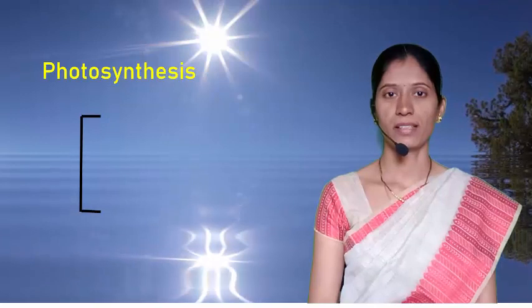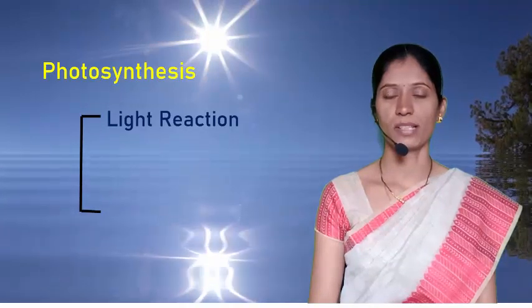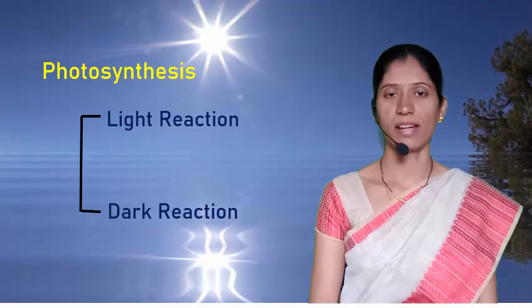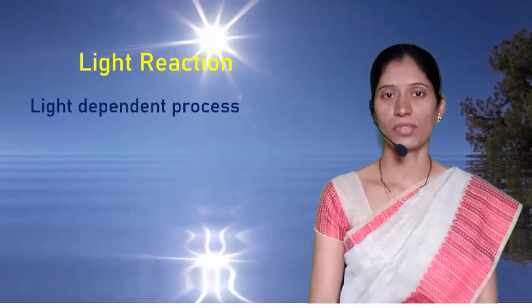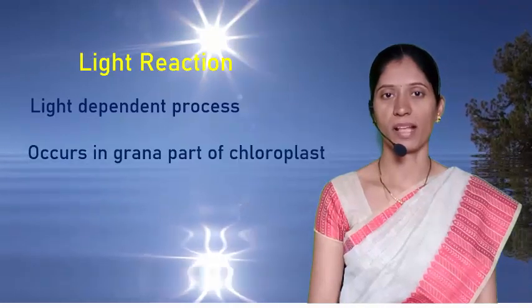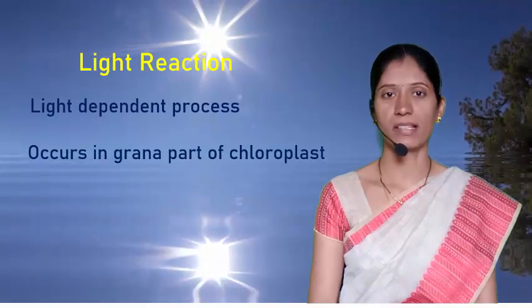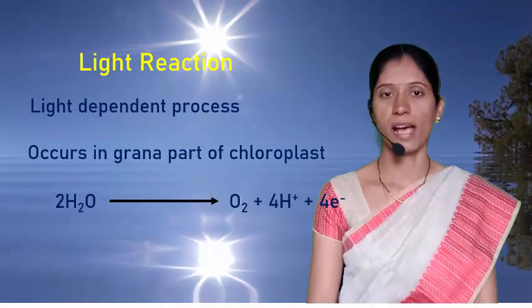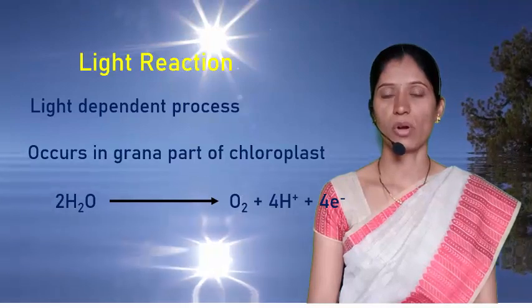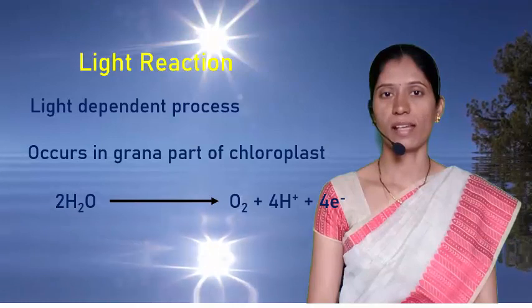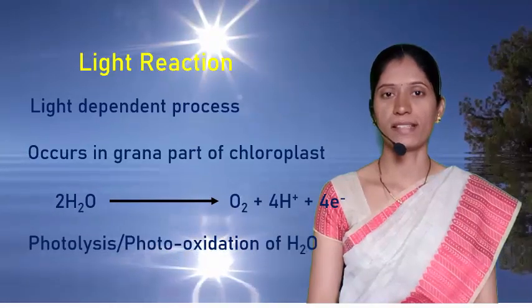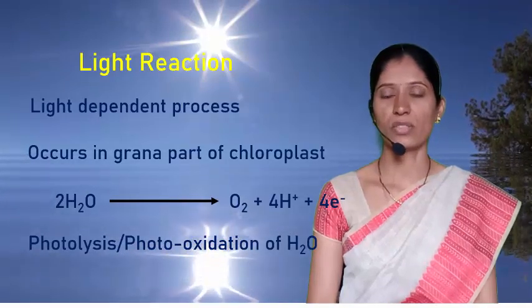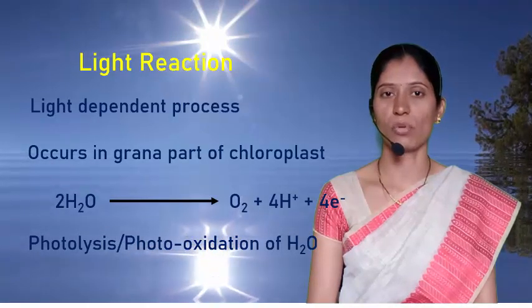We can study the whole process of photosynthesis in two parts: Part 1 is light reactions and Part 2 is dark reactions. Light reaction of photosynthesis is a light-dependent process and it occurs in the grana part of the chloroplast, because light-trapping pigments are present in the quantasomes of grana thylakoids. In light reactions, water molecules split into hydrogen and oxygen. Such splitting of water molecules in the presence of sunlight is called photolysis or photo-oxidation of water, which we will study in detail in the next video.